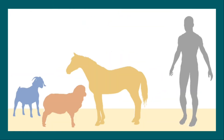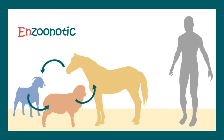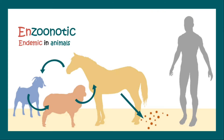Spread of Bacillus anthracis can occur from animals. It is an enzootic disease, meaning it is endemic in animals and spreads from one animal to the other. From the animals — from their coats and biological substances — the spores may get into the soil, and from the soil they can enter the human body. The spores can also go back to the animals and continue the cycle of enzootic disease.